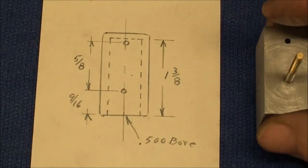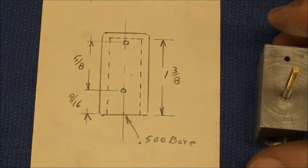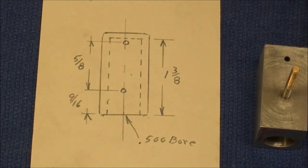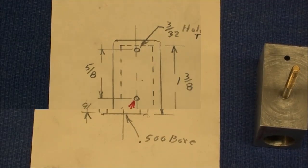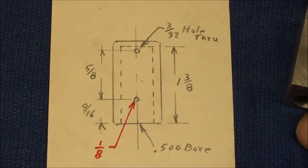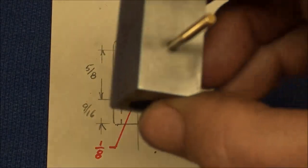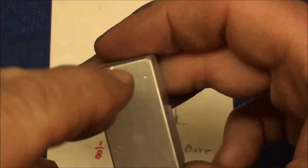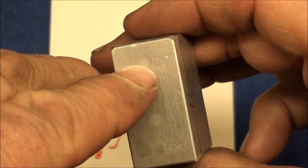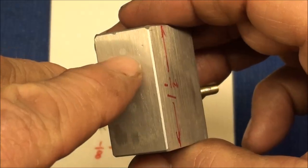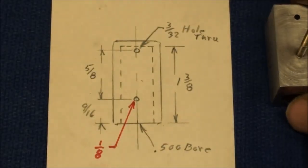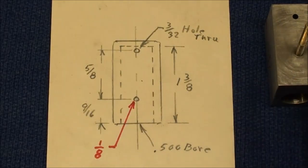But the bottom hole here with the brass rod in it is nine sixteenths up from the bottom, and the other hole is five eighths up from that. And this is not to scale as you can see. Now I'm going to stop for just a second and I'll pencil in the dimensions for those holes as well. Okay, the top hole is three thirty-seconds through, remember it went all the way through and later on I plugged it. And the purpose of that was so that we could transfer the ports. And the bottom hole is eighth inch in diameter.